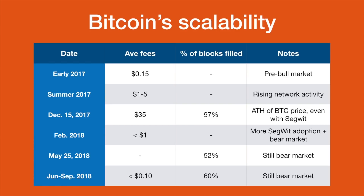In terms of Bitcoin scalability history, in early 2017 average fees were about $0.15 — that was pre-bull market. During the summer, fees rose to $1 to $5 as network activity increased. On December 15, 2017, at the height of the bull market, average fees were $35 per transaction — ridiculously high — and 97% of blocks were filled, even with SegWit in effect because not many had implemented it yet. Moving to 2018, in February average fees dropped back under $1 as SegWit adoption grew and the bear market began. By May 25, 2018, average block fill was back down to 52%, and from June to September 2018, average fees were below 10 cents with 60% of blocks filled — much more usable than before.